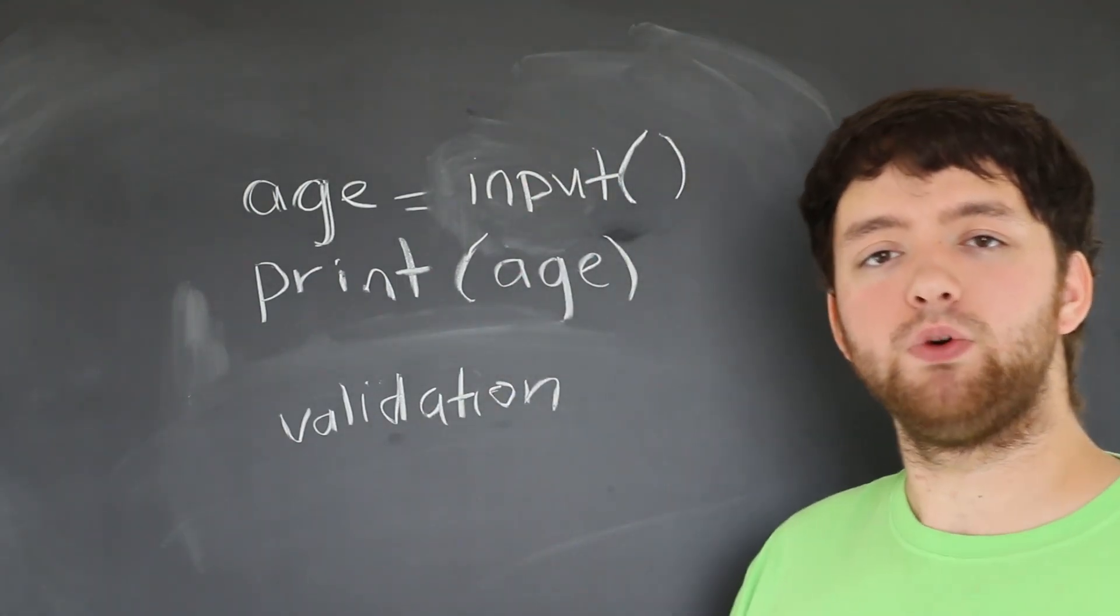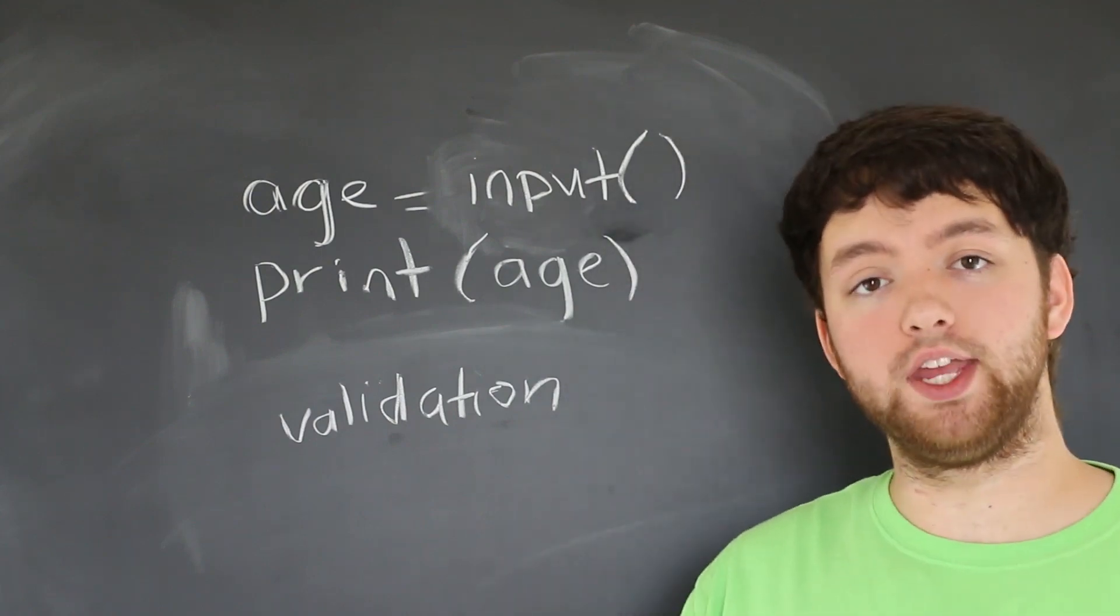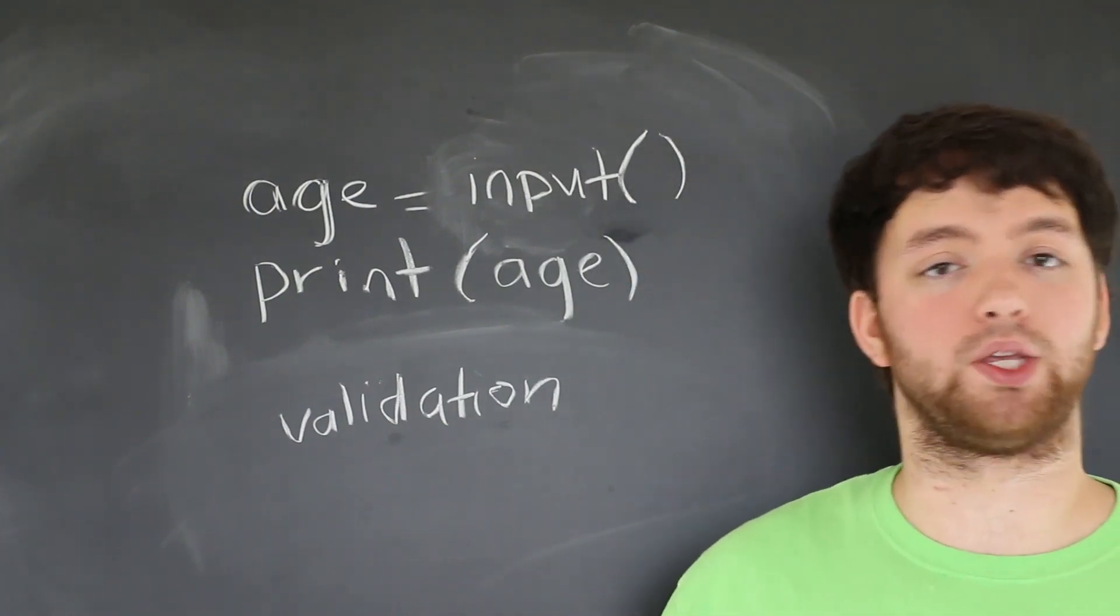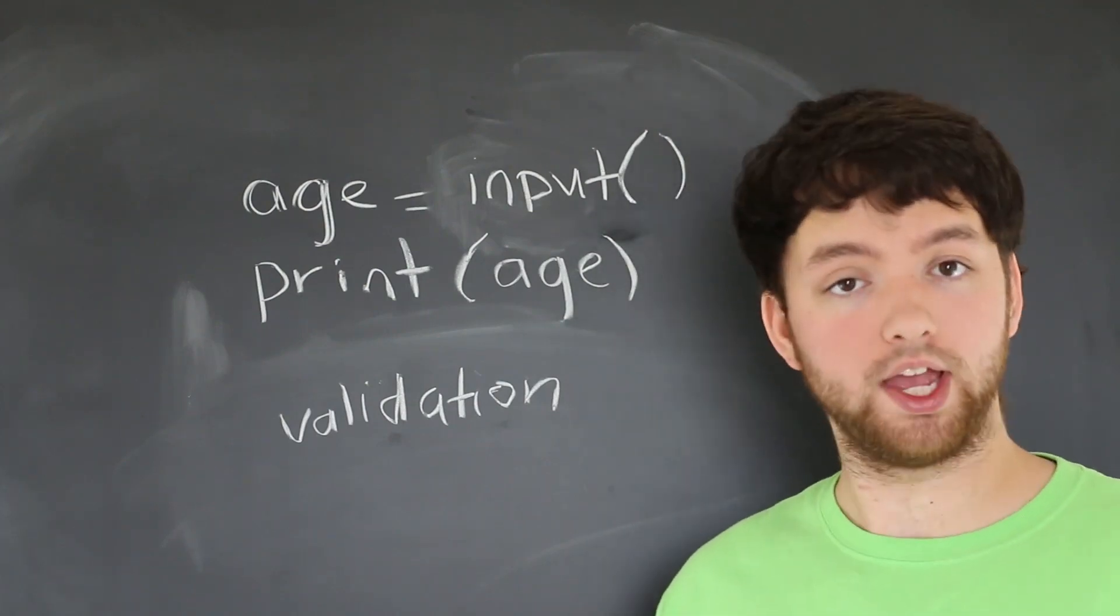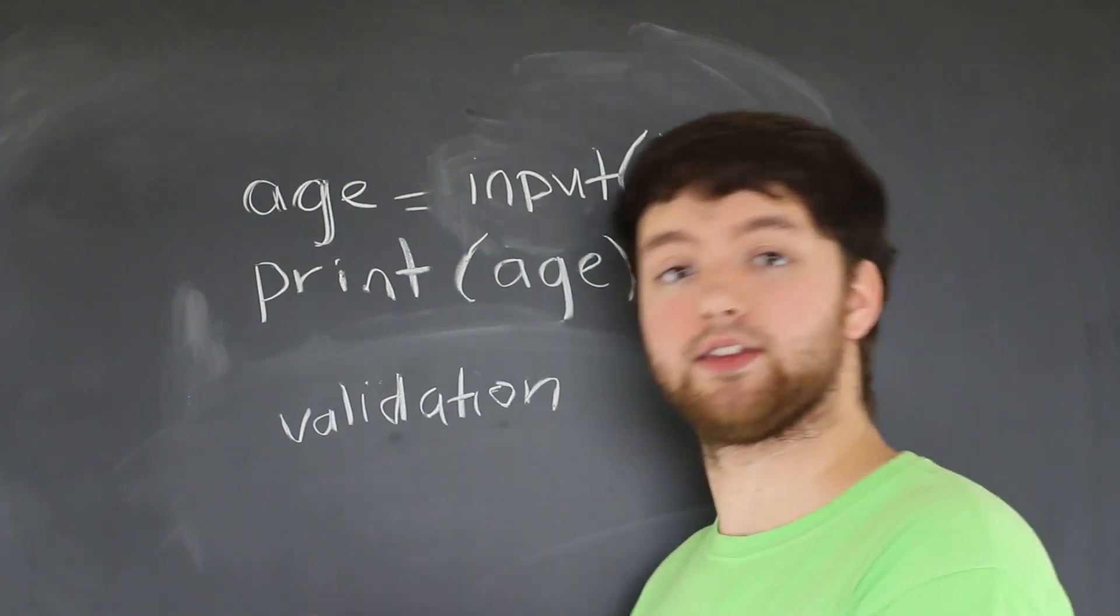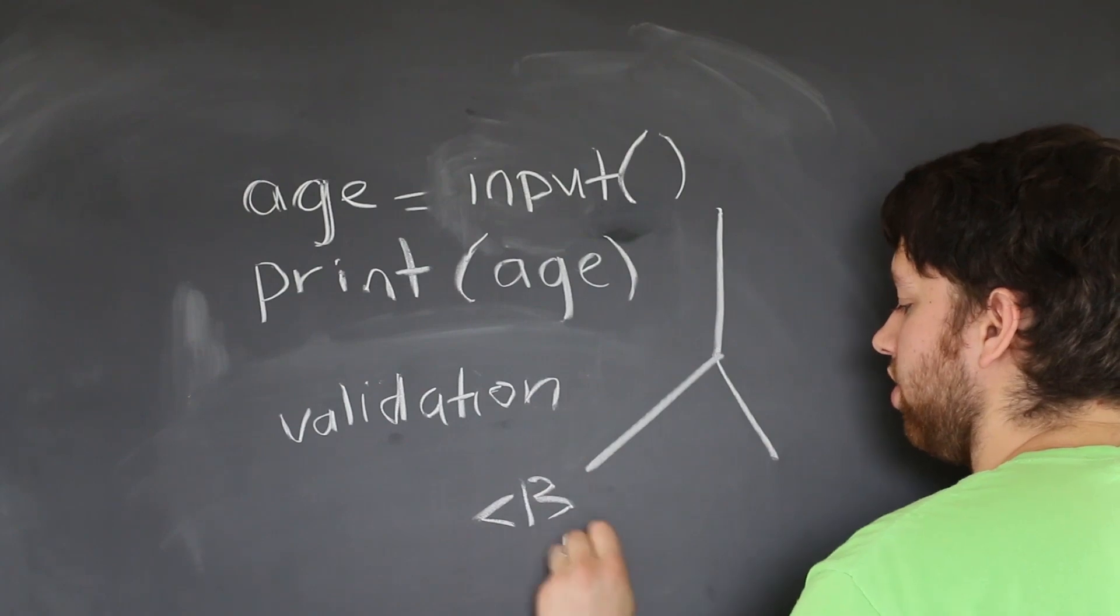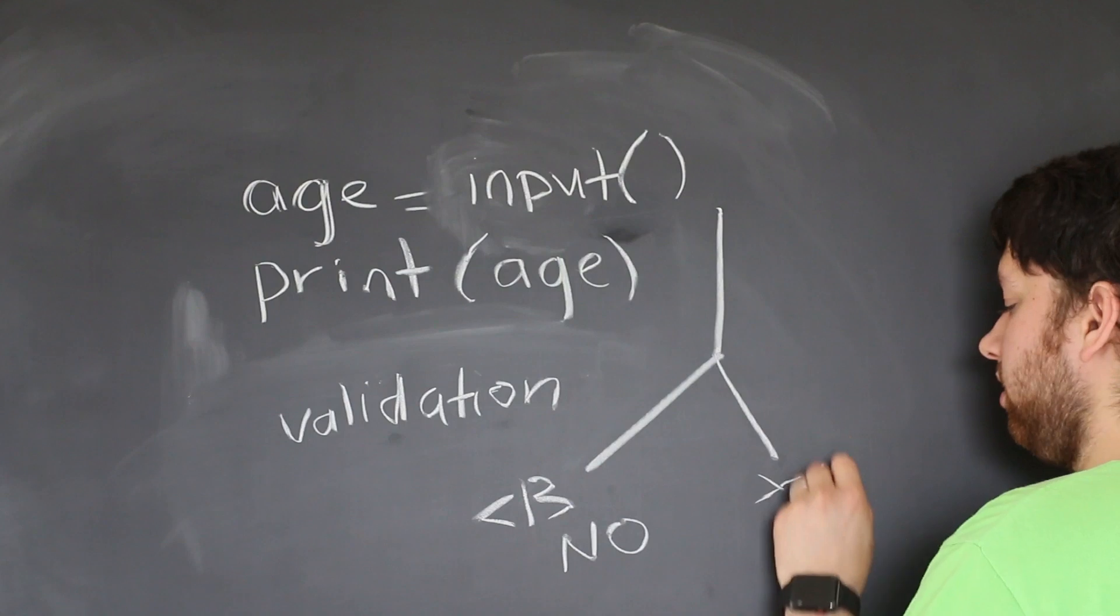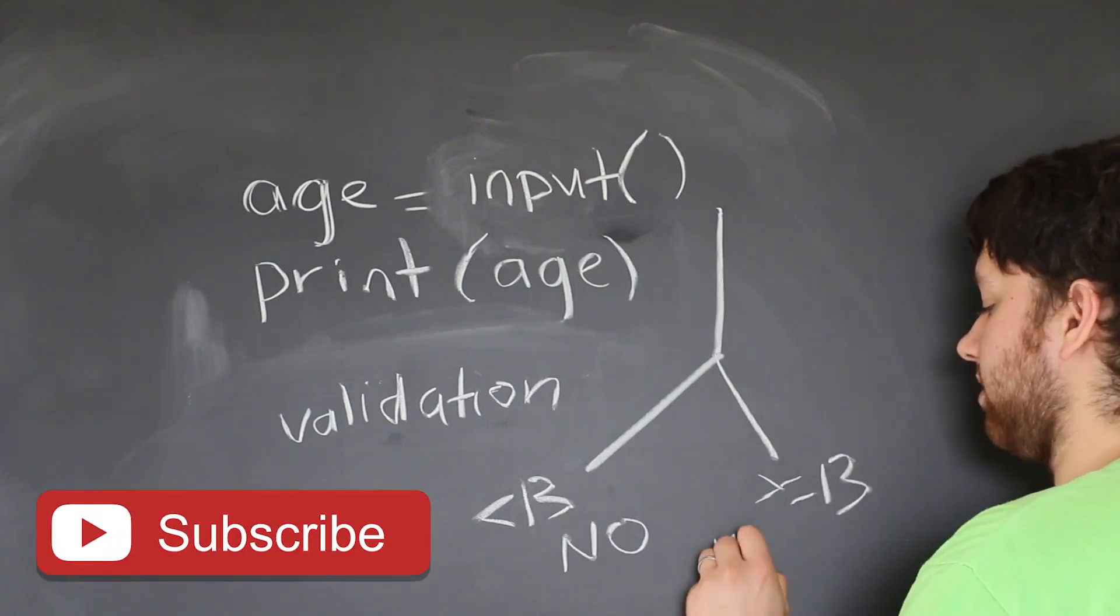Once we have this basis, we want our application to do different things depending on the input. For example, if we made a game that you had to be 13 years old to play, we might have something like this. Less than 13? No, you don't get access. If you're greater than or equal to 13, then yes, you get access.